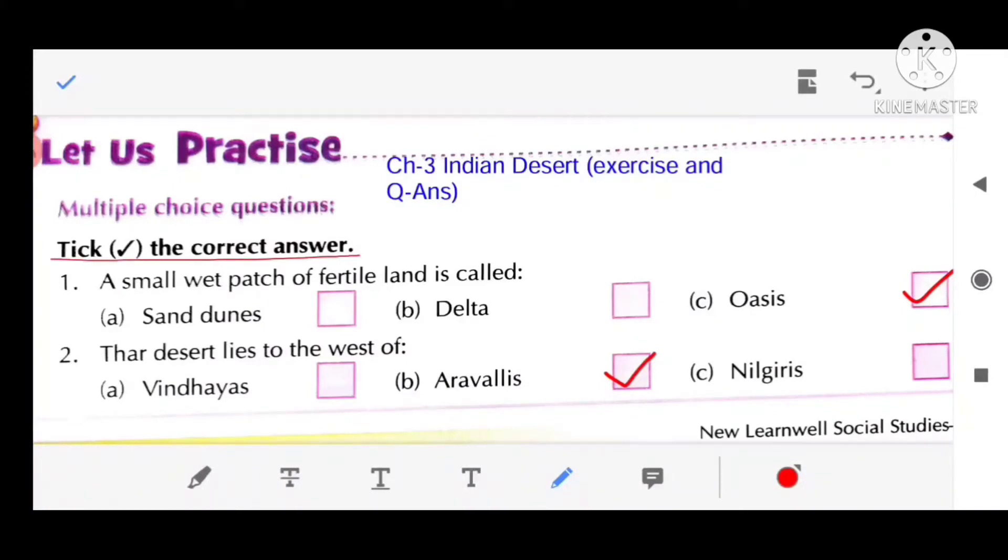A small wet patch of fertile land is called oasis. The Thar desert lies to the west of Aravalli.